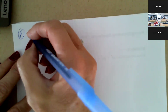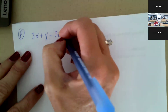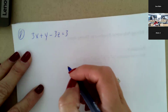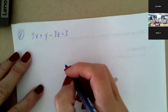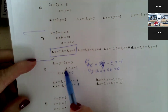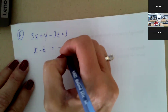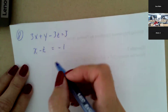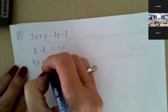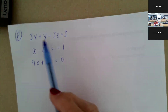Let's move on to number eight. We have three x plus y minus three z equals three. They also gave us x equals z minus one, which I'll rewrite as x minus z equals negative one. And then the third row is nine x plus six y equals zero. So we have three variables, two variables, two variables — but not the same two variables.